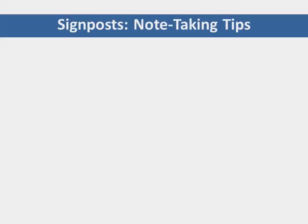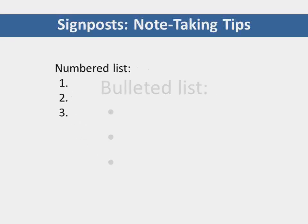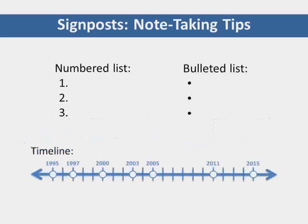Now that you can recognize signposts, use them to help you take notes. Remember, each signpost signals a step in a process or a new event in a series of events. You can use them to help you organize the information you hear in a numbered list, a bulleted list, or a timeline. You can then add your own signposts to these notes to summarize what you've heard in the correct order, in speech or in writing.